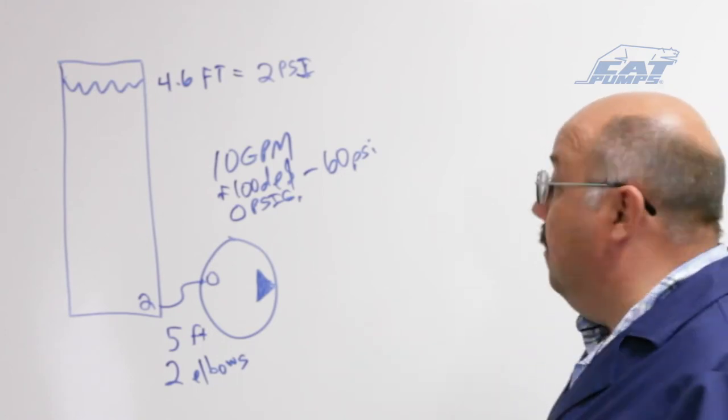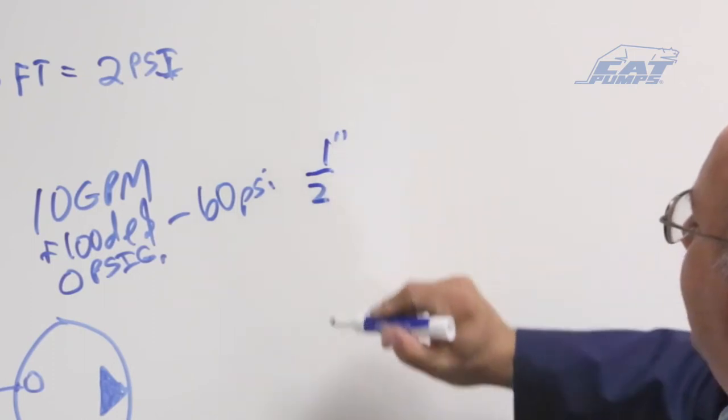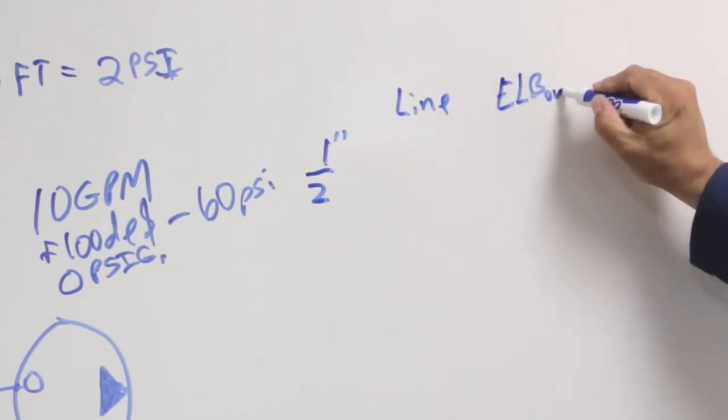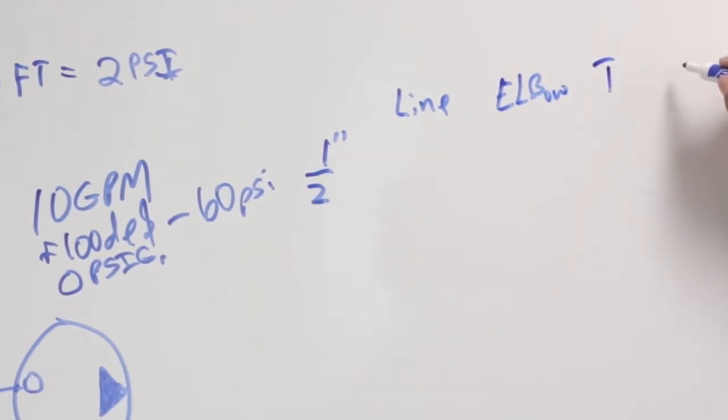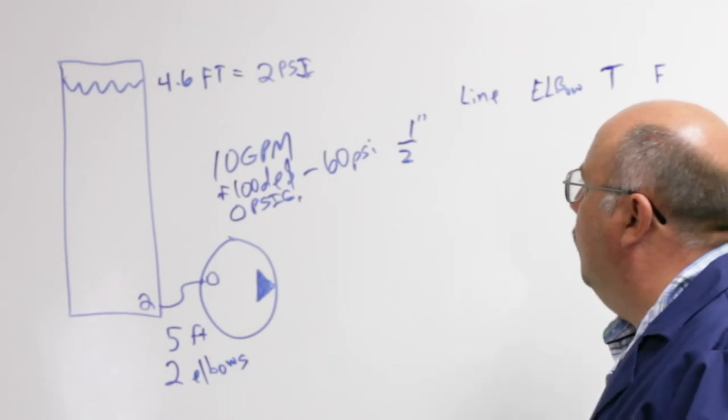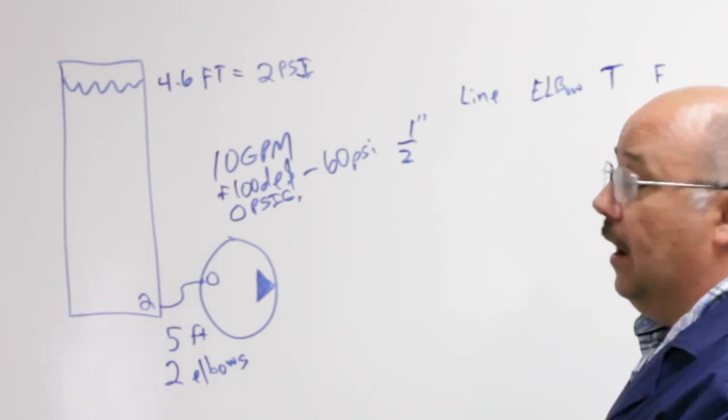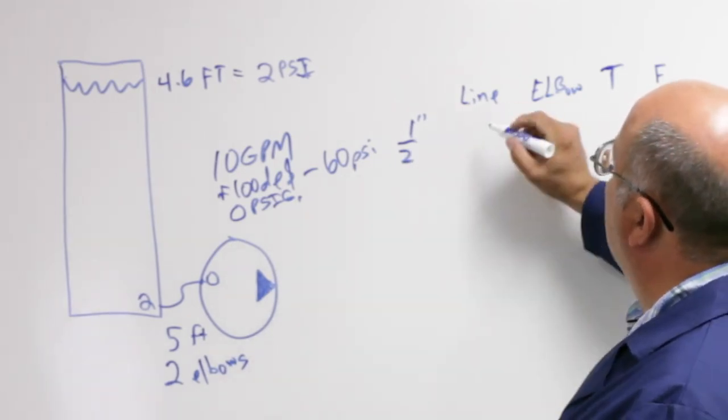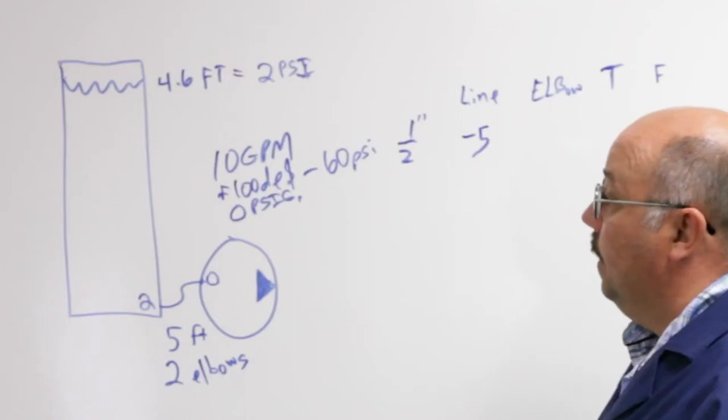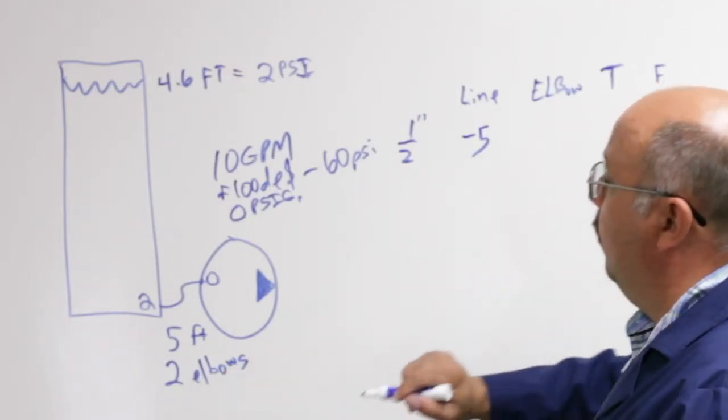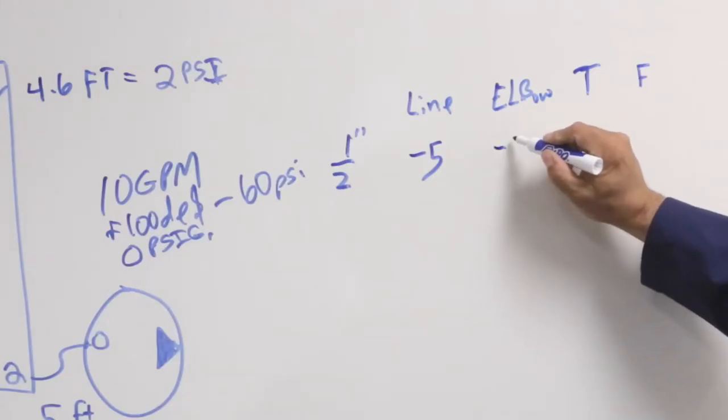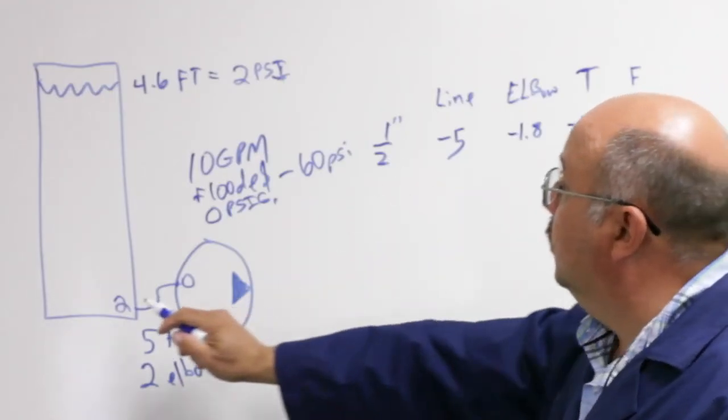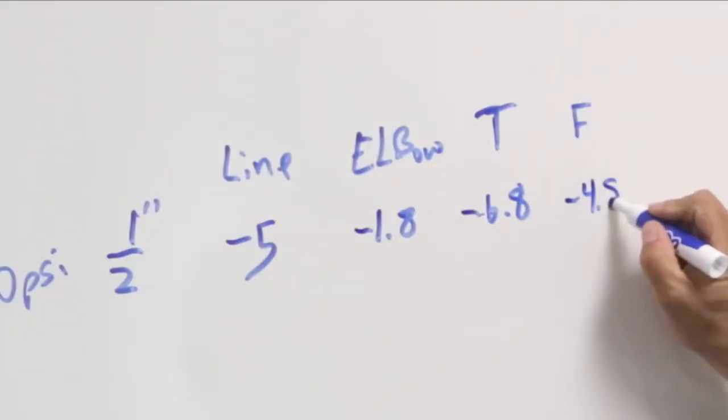Let's see, 10 GPM, maybe a half inch line will work. So we're going to look at a half inch line and we're going to account for the line loss. We're going to account for the elbows. Then we're going to add them up, get a total. And then we're going to get a final pressure. So if we look at charts and calculations that are available online or several places on the internet, we see that a 5 foot half inch line will drop minus 5 PSI at 10 GPM. A couple of elbows thrown in there. We find out that they drop another minus 1.8 for a total loss of minus 6.8. Therefore, our final pressure, 2 minus 6.8 is a negative 4.8 PSI.